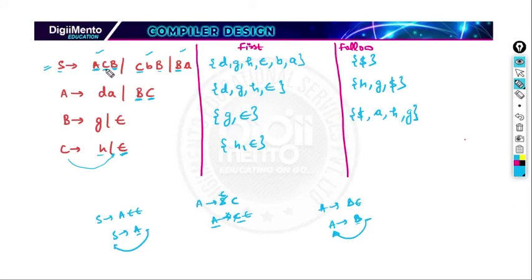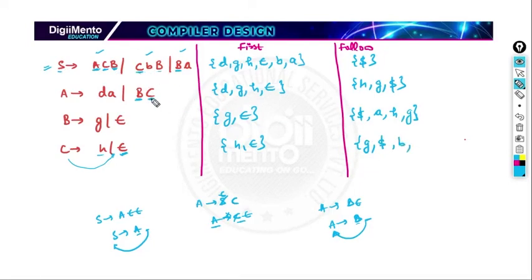FOLLOW(C): C appears in S → ACB, followed by B. FOLLOW(C) includes FIRST(B) = {g}. If B produces epsilon, FOLLOW(C) = FOLLOW(S) = {$}. C also appears in A → dABC — nothing follows C, so FOLLOW(C) = FOLLOW(A) = {h, g, $}. C also appears in S → BaC — nothing follows, so FOLLOW(C) = FOLLOW(S) = {$}. So FOLLOW(C) = {g, h, $, b}. In this way, we can find FIRST and FOLLOW for each and every variable.